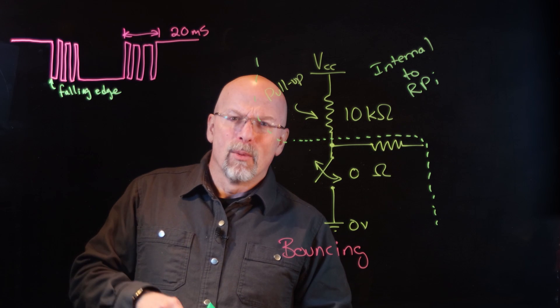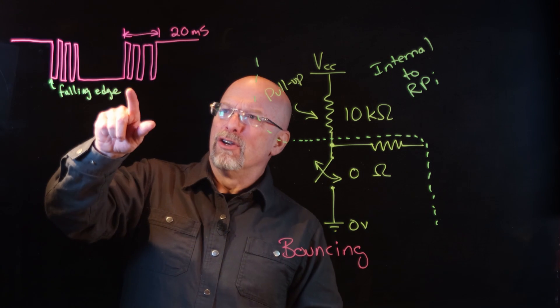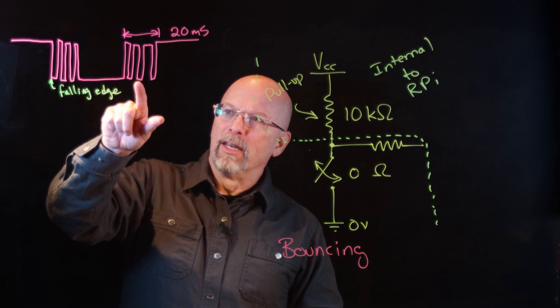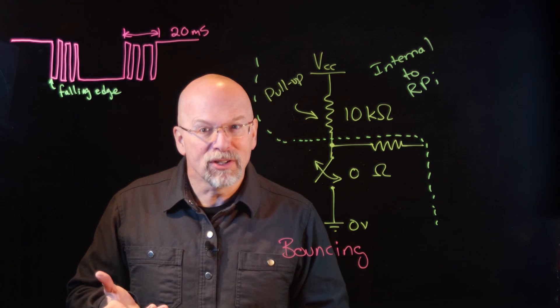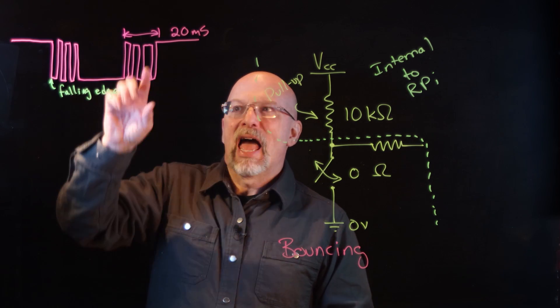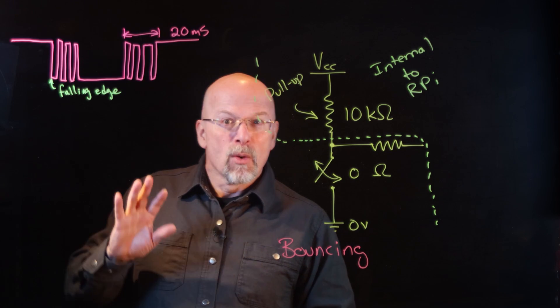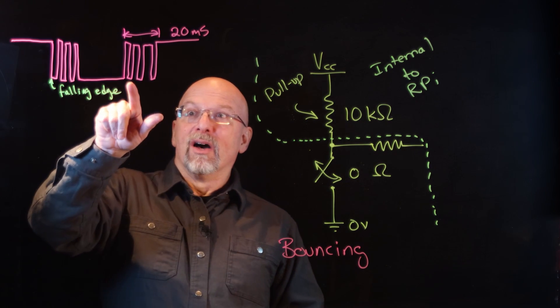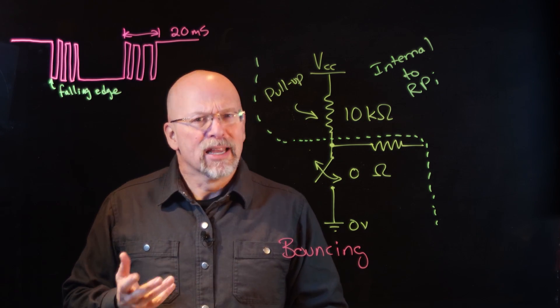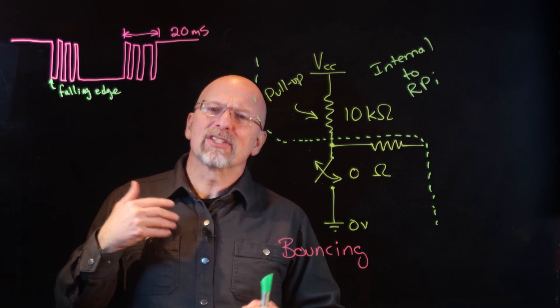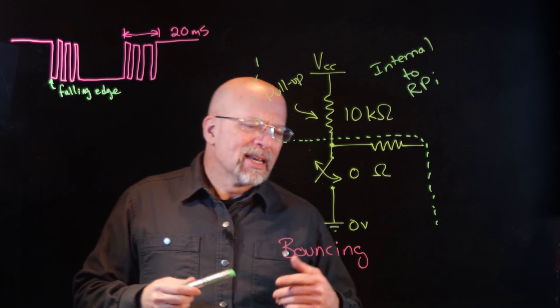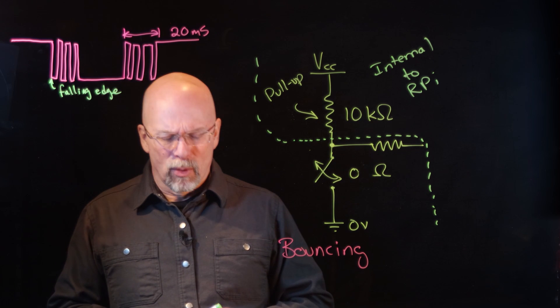That's not the only problem though. When you take your finger off the button, notice also that we're getting 1, 2, 3 also falling edges as that button is bouncing. We would then think the button is getting pushed again. No, it was getting released. And so how do we avoid this? Now there are a number of ways to avoid this.